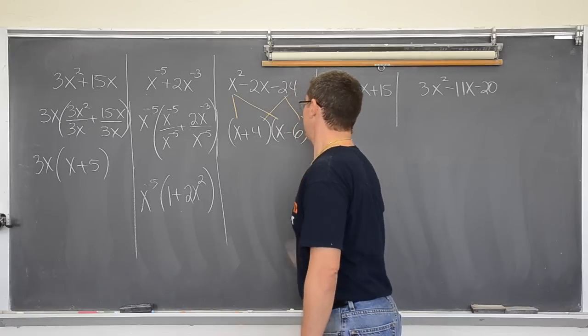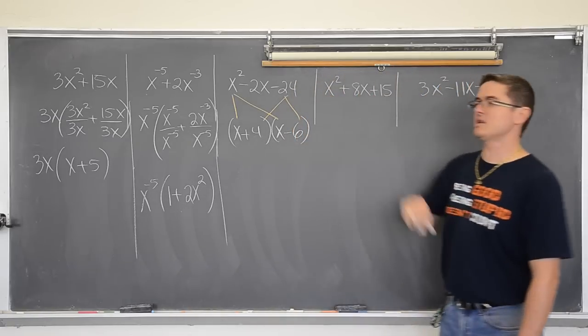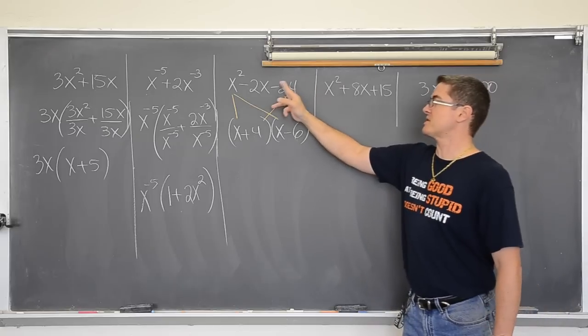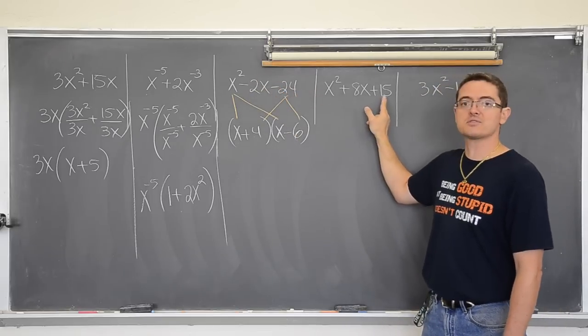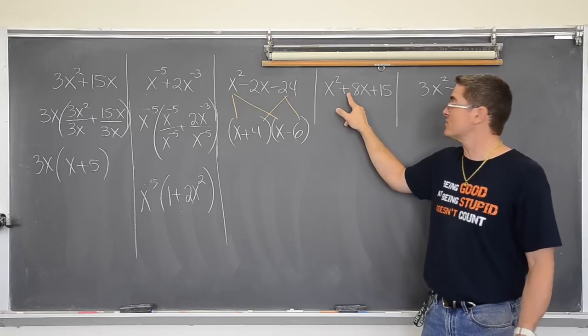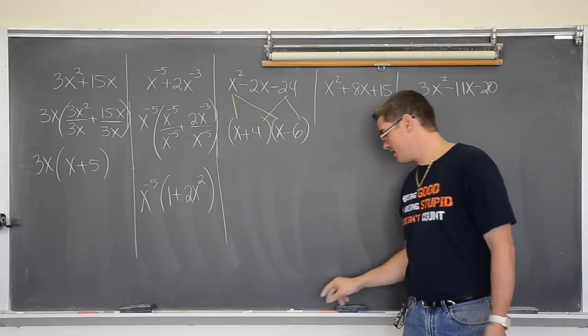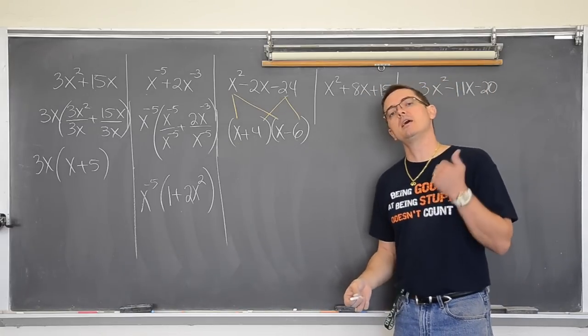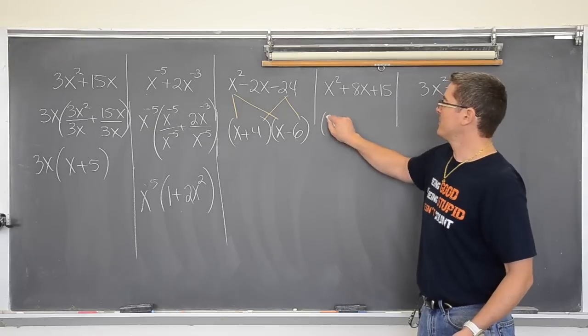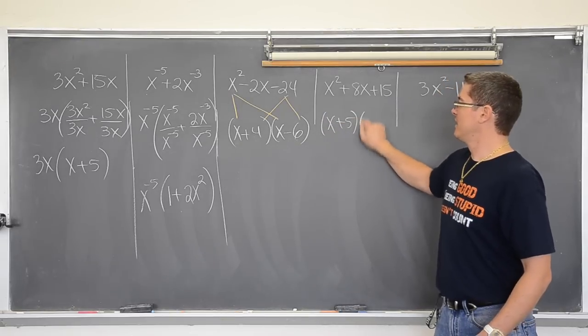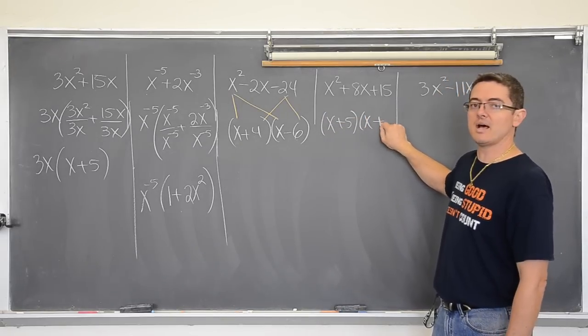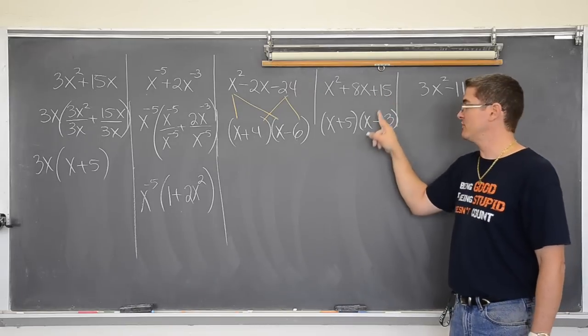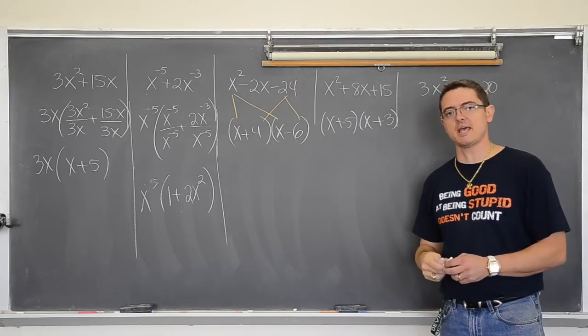Alright, what if you have a leading coefficient of 1 still, but your last sign is positive? Well instead of saying factors that subtract to the middle term, you will say factors that add to the middle term. What factors of 15 add to 8? There is nothing to choose from. 1 and 15 is 16 and 3 and 5 is 8. So this will be (x + 5)(x + 3). If your last sign is positive, your two signs in your factors are always going to be the same.